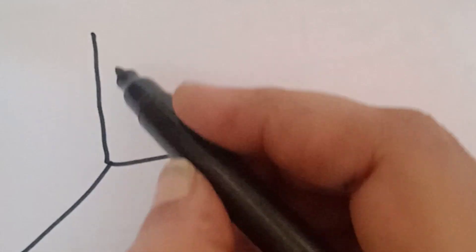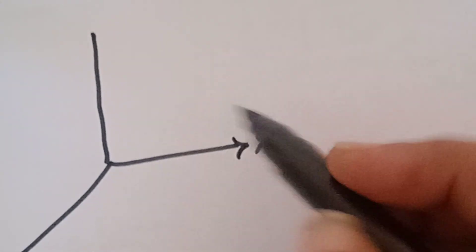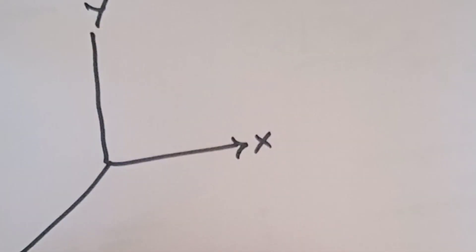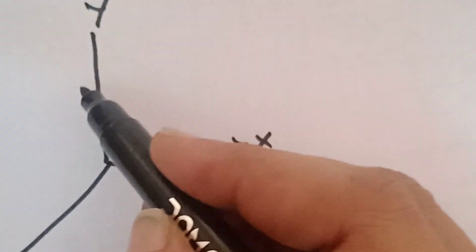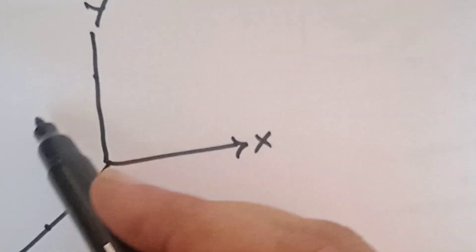So now coordinate axis. So x-axis, y-axis, z-axis. Here we can take square. Square is 10 centimeter.